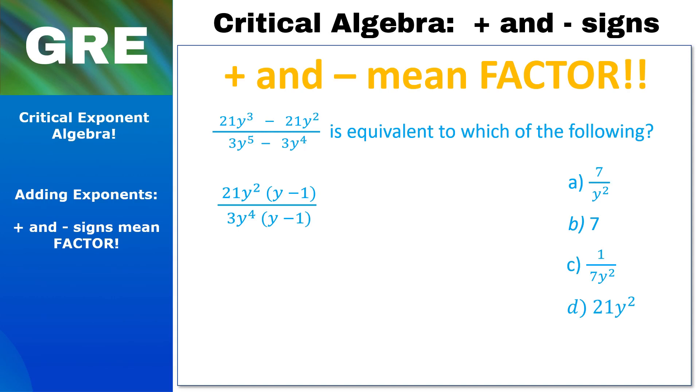Now we get to cross off the y minus one on the top and the bottom because the y minus one is getting multiplied and we are crossing off the entire statement. So we are left with 21y² over 3y⁴. Now we know that 3 goes into 21 seven times, so we can do some crossing off and be left with 7y² over y⁴.